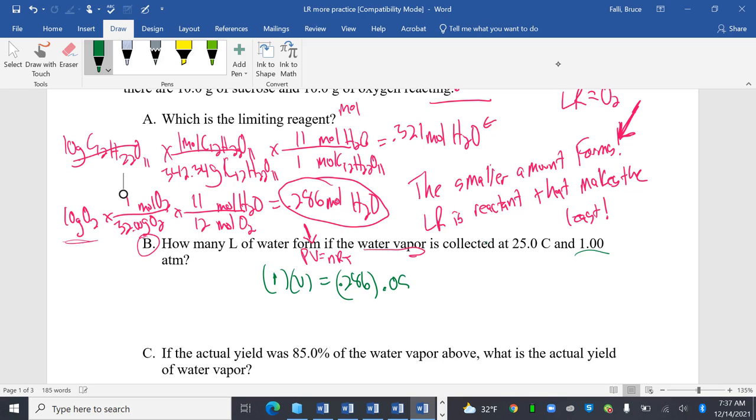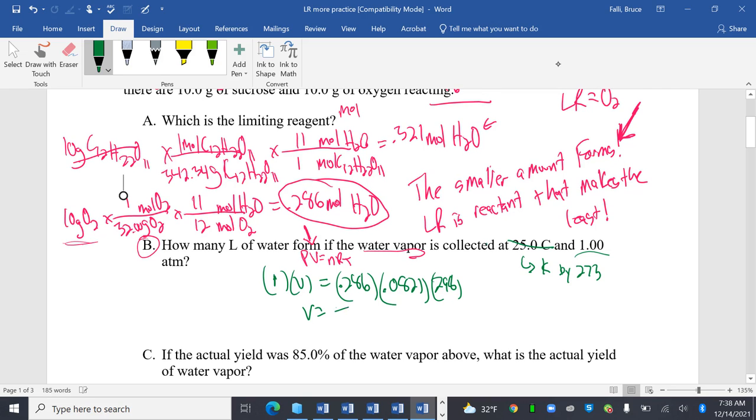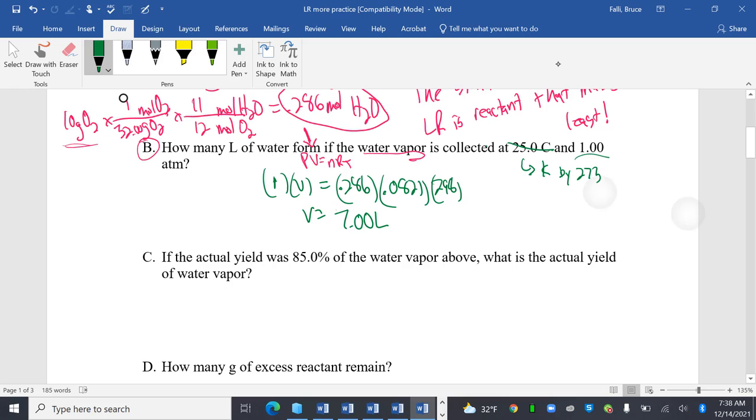So my pressure is one atmosphere. I'm using this equation right here. My volume is what I'm solving for. My moles are my limiting reactant moles. R is 0.0821 and T, 25, it's a dirty word. Celsius is a dirty word. Remember, you have to convert it to Kelvin right away by adding 273. So 273 plus 25 is 298. I'm going to move back. 0.286 times 0.0821 times 298 is 7.00 liters. Okay. Good. Of H2O.